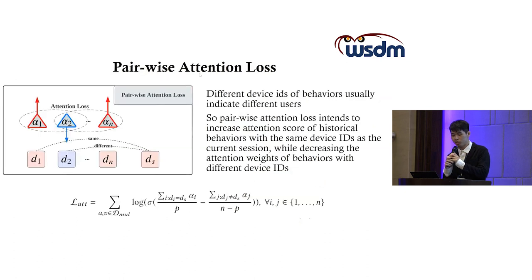The second module is the pairwise attention loss. Different device IDs of behaviors usually indicate different users. So pairwise attention loss intends to increase attention score of historical behaviors with the same device ID as the current session, while decreasing the attention weight of behaviors with different device IDs. In this way, we can pay more attention to historical behaviors with the same device ID as the current session.